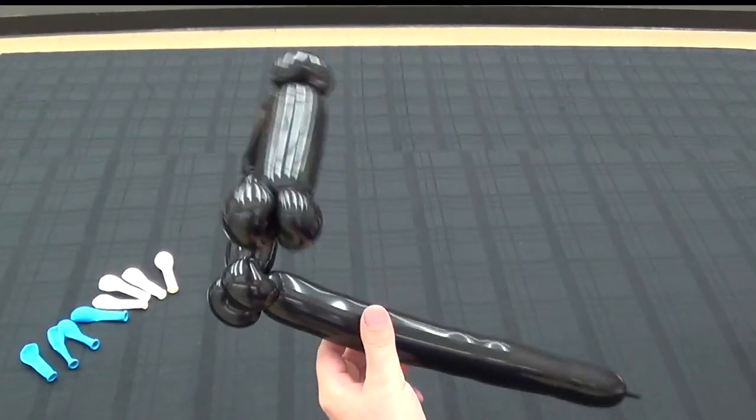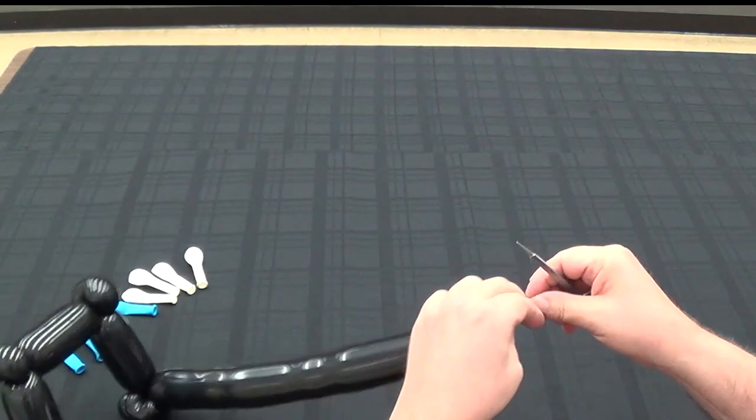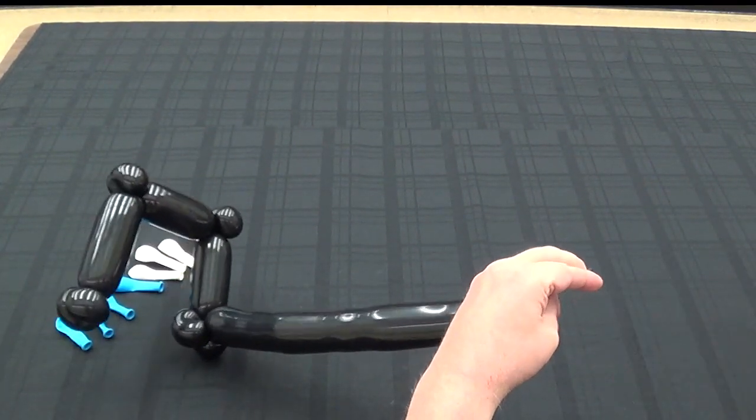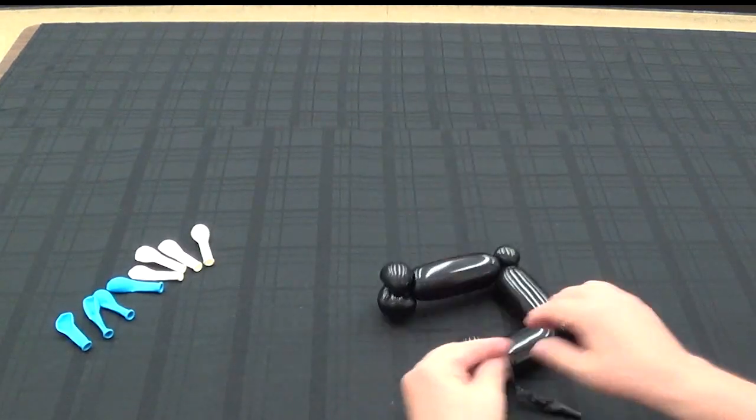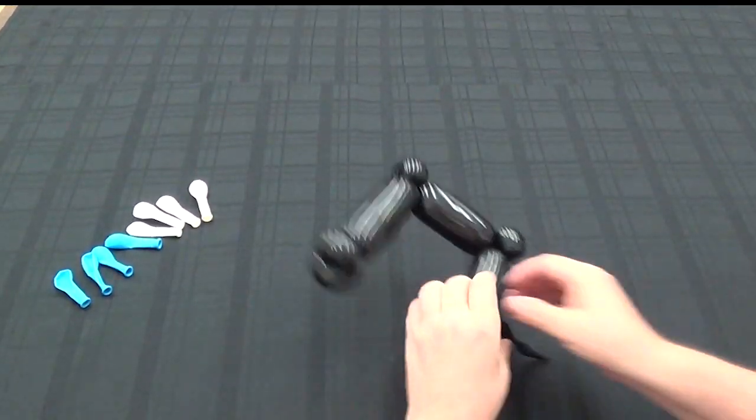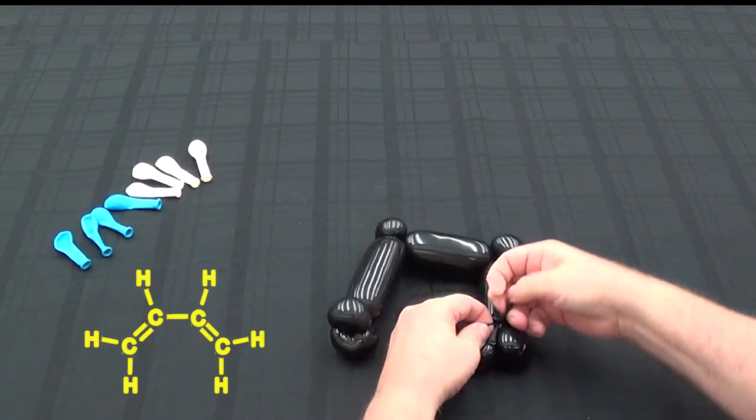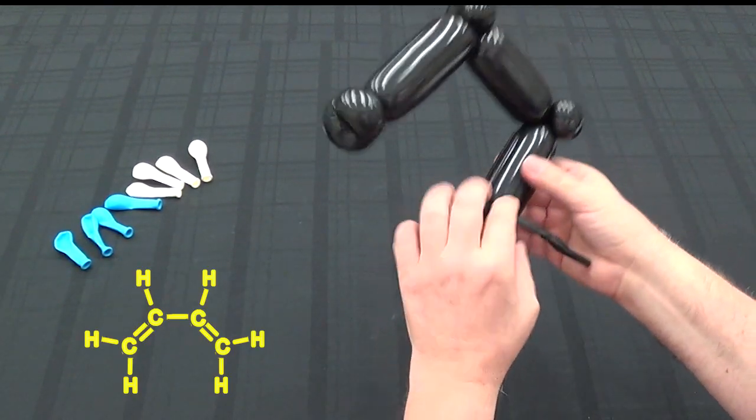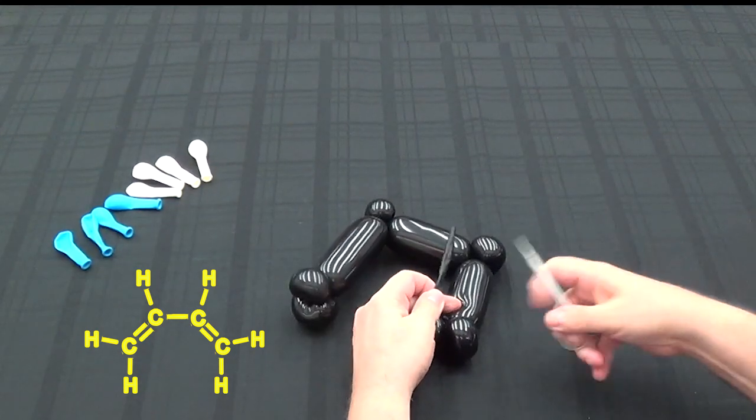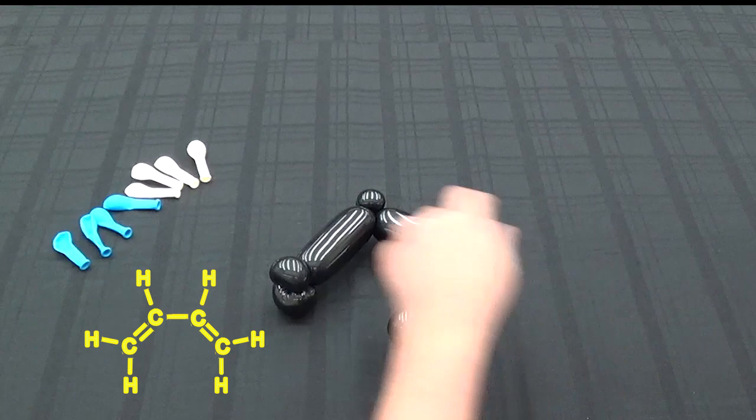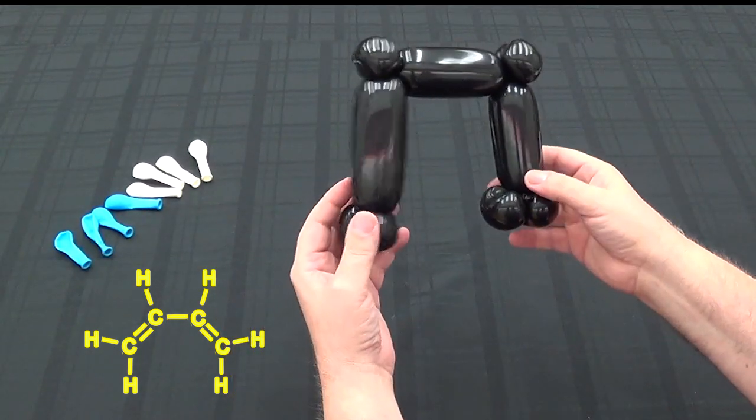So there's our four-carbon backbone. All this extra balloon we can easily get rid of. We're simply going to take a pair of scissors and cut that off. We'll tie that off just so it doesn't deflate. So that's good and tied off. We're going to cut off the excess. That gives us now our four-carbon backbone.